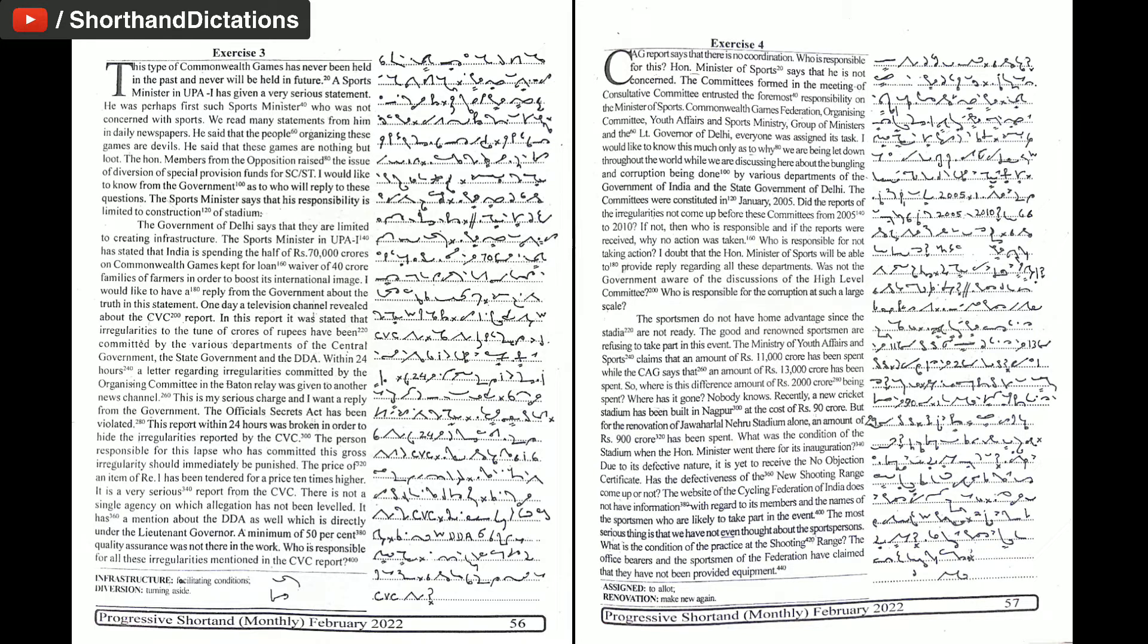I doubt that the Honourable Minister of Sports will be able to provide reply regarding all these departments. Was not the government aware of the discussions of the High Level Committee? Who is responsible for the corruption at such a large scale?